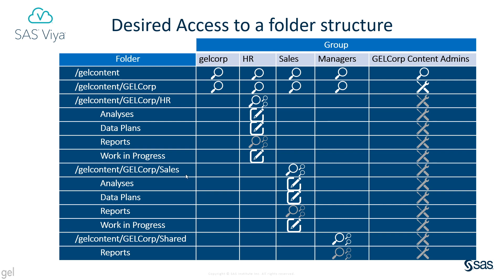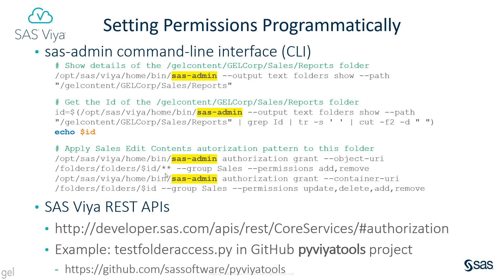If you only have a few patterns to apply, it's reasonable to set up the grants using the visual interfaces in SAS Environment Manager or SAS Drive. But if you have a lot of patterns to apply, it might be quicker to use a programming interface. The SAS Admin Command Line Interface, or CLI, is a great tool for viewing and changing permissions. Let's take a look.